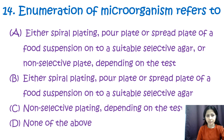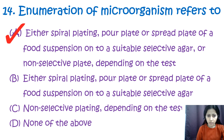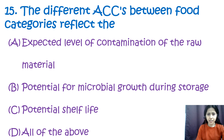Question number fourteen: enumeration of microorganisms refers to option A: either spiral plating, pour plating, or spread plating of a food suspension onto a suitable selective agar or non-selective plate depending on the test; option B: spiral plating, pour plate, or spread plate onto selective agar only; option C: non-selective plating depending on the test; option D: none of the options. The correct answer is option A.